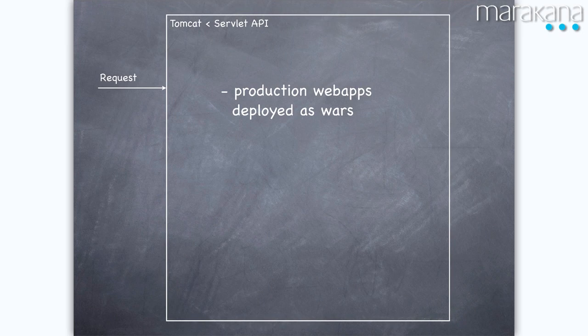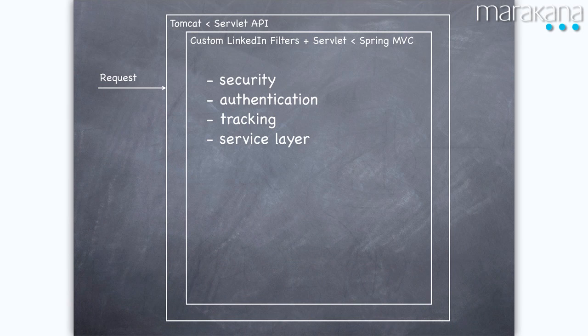The request comes in to our data center, hits a machine running Tomcat, which understands the Servlet API. All of our production web apps are deployed as WARs on these Tomcat machines. Then the request hits a bunch of custom LinkedIn filters and a custom LinkedIn Servlet — a Spring MVC Servlet. This code does very important stuff: security, authentication, verifying credentials, tracking page views to see what our users are looking at, and bootstrapping our service layer.